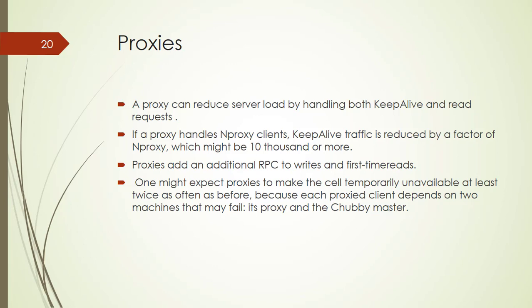There are two main scaling mechanisms. The first is proxies: a proxy can reduce server load by handling both keep-alive and read requests. It cannot reduce write traffic, which passes through the proxy cache. If a proxy handles N proxy clients, keep-alive traffic is reduced by a factor of N, which might be 10,000 or more. A proxy cache can reduce read traffic by at most the mean amount of read sharing, a factor of around 10. A proxy adds additional RPCs to writes and first-time reads, and proxies also alter failover strategies in a useful way.